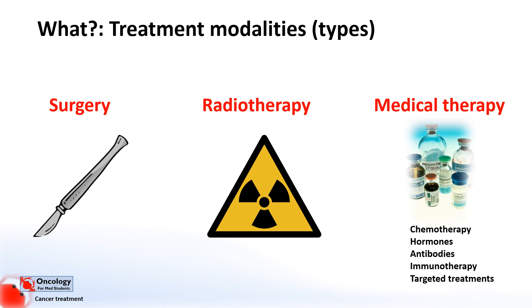Examples include hormone therapies, antibody therapies, immunotherapies — which are aimed at helping the immune system fight off the cancer — and targeted therapies, which are small molecules that are designed to target and inhibit mutated proteins that are found in specific cancer cells.